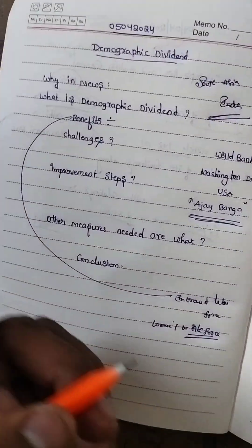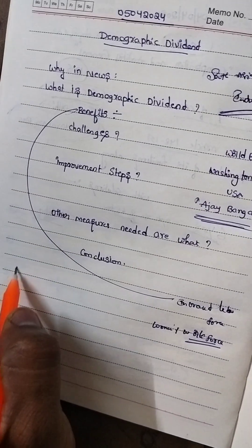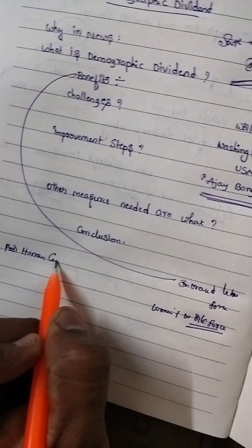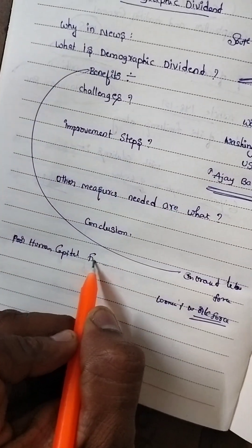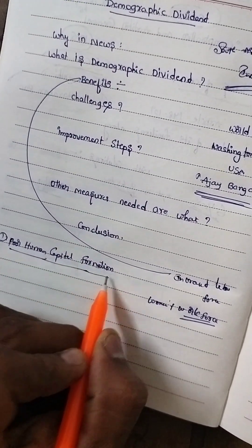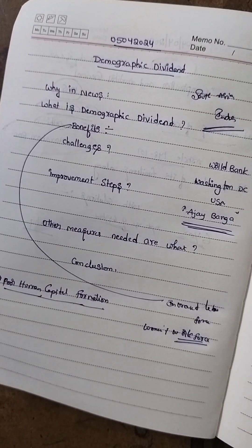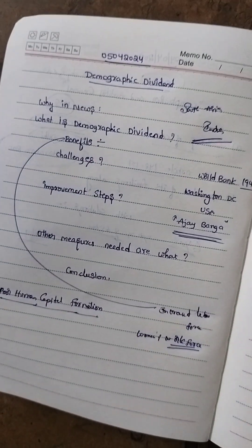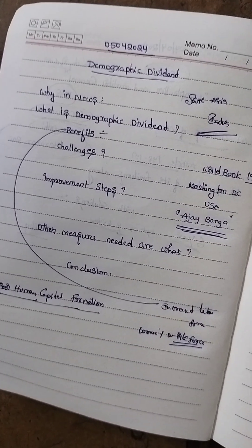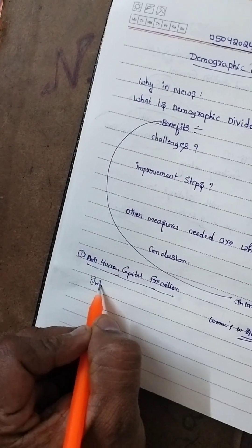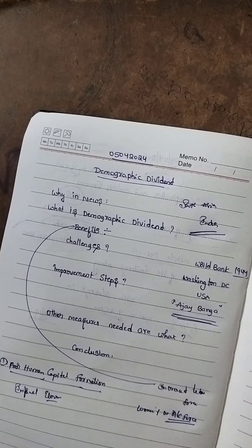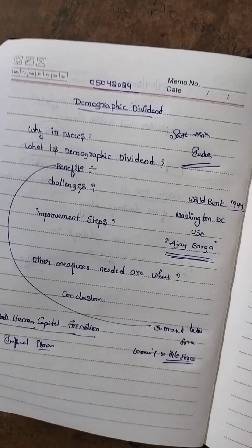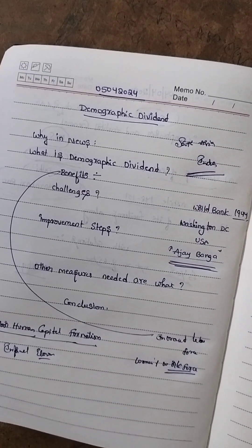The challenges include poor human capital formation. India faces challenges with low employability among graduates and post-graduates, with only 20 to 30 percent of engineers finding jobs suited to their skills, highlighting a need for skill development. Another challenge is the informal economy — approximately 216 million people in India, primarily in the agriculture sector, are part of the informal economy, facing lower wages and limited social security.